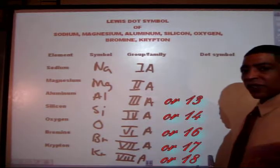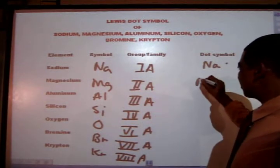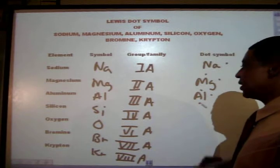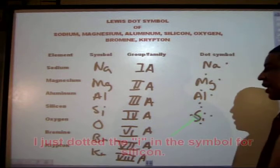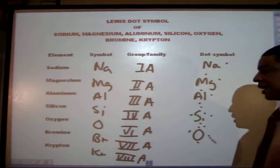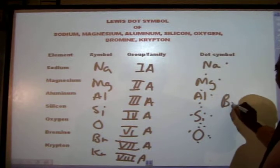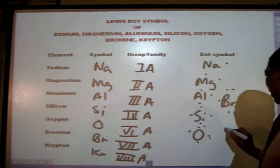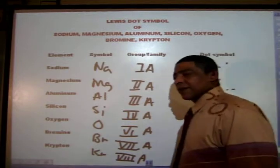The Lewis dot symbol for sodium, therefore, will be Na with 1 dot. Magnesium, Mg with 2 dots. Aluminum, Al with 3 dots. Silicon, Si with 4 dots. Oxygen is O with 6 dots. Bromine will be Br with 7 dots. And krypton will be Kr with 8 dots.